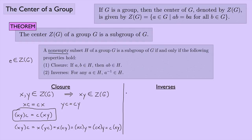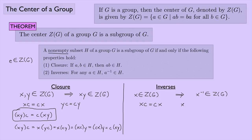How about inverses? If X is some element of the center, we need to show that X inverse is also in the center, meaning it commutes with every element in G. Since X is in the center, X times C equals C times X for any C in G. Also, since C is in G, C inverse is also in G, which means X times C inverse equals C inverse times X — since X is in the center and commutes with every element, including the inverse of C.